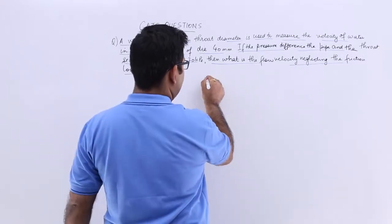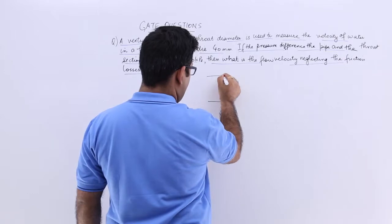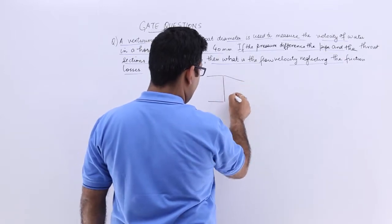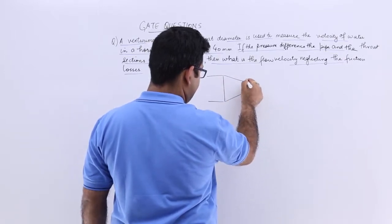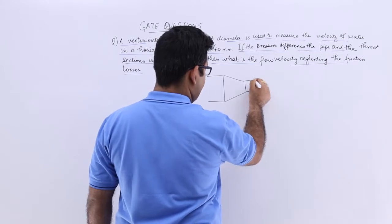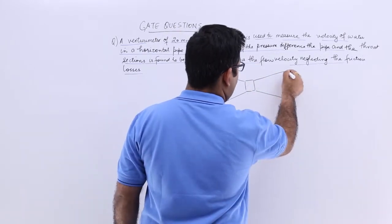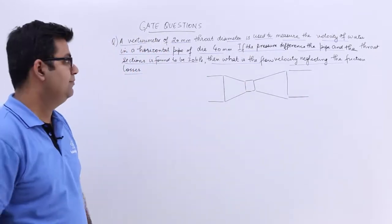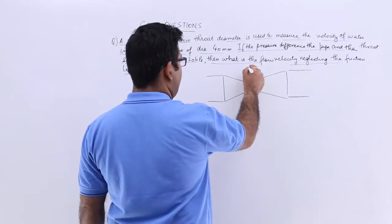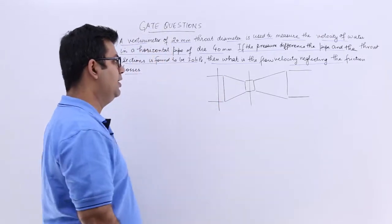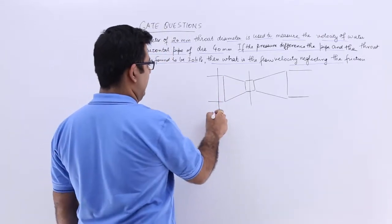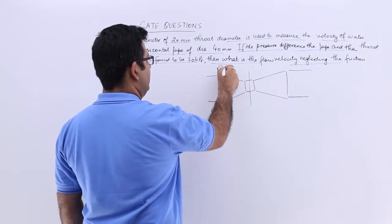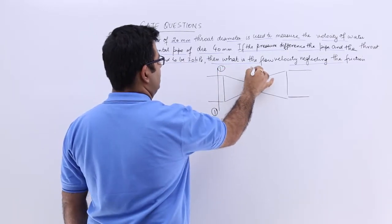So this is how your venturi meter will look like. Let us say this is the throat diameter and this is the pipe diameter or the pipe section. You will have pipe section as 1 and throat section as 2.